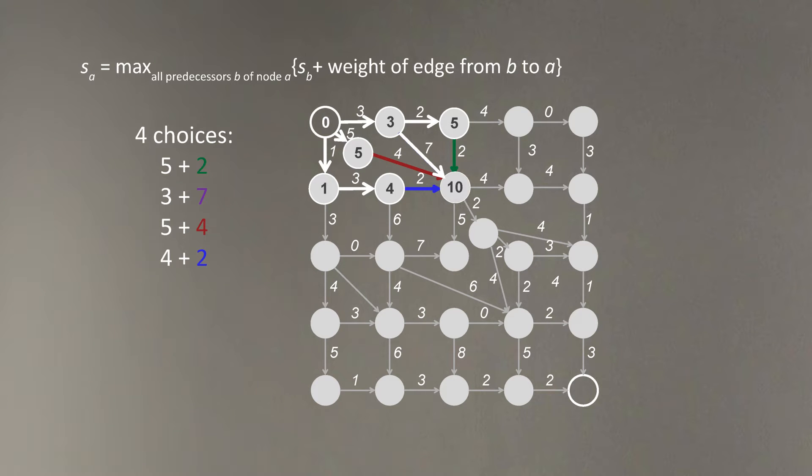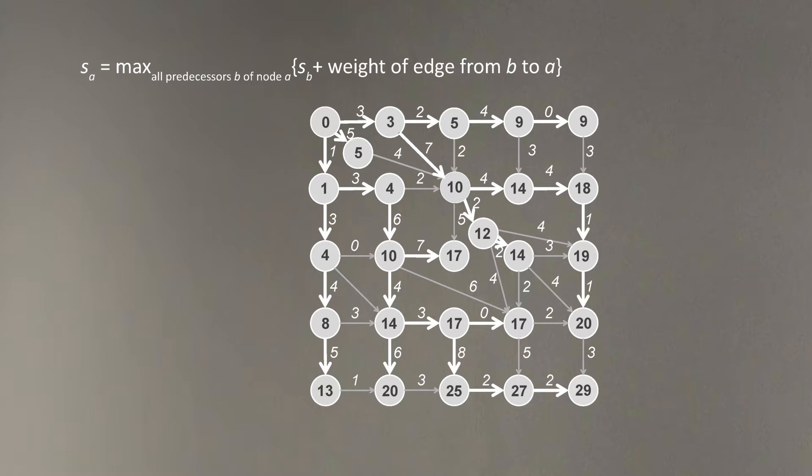We continue doing this. And in the end, we will construct this graph with every node marked by the length of the longest path. And we will learn that the length of the longest path from the source to the sink is 29.